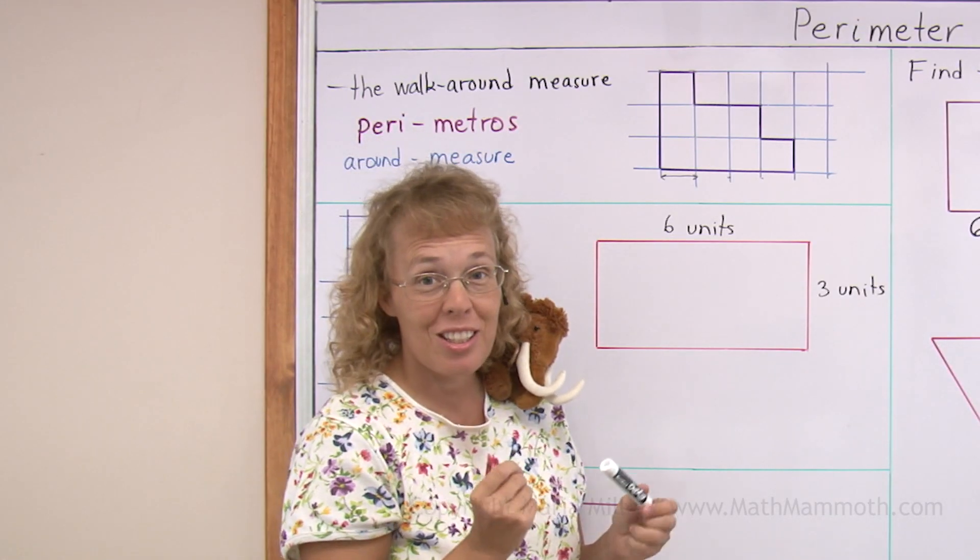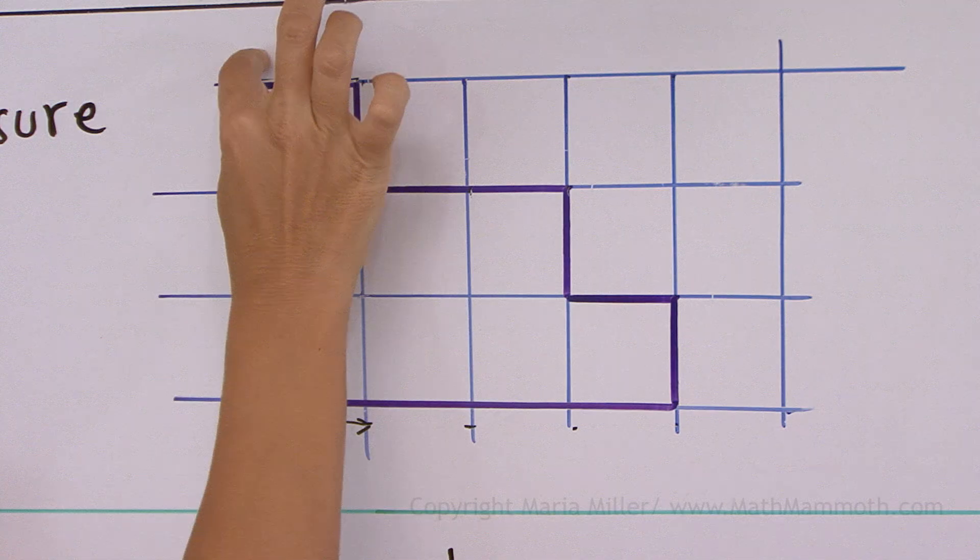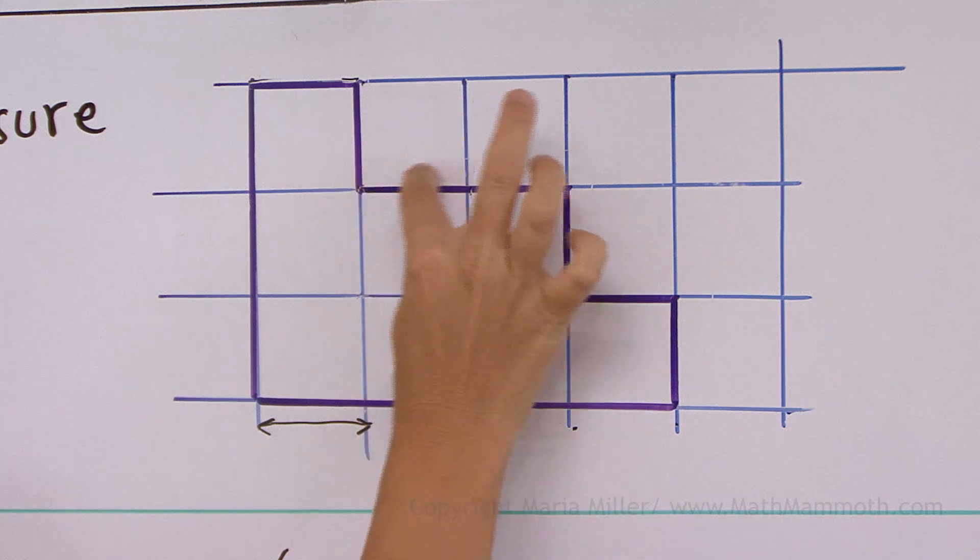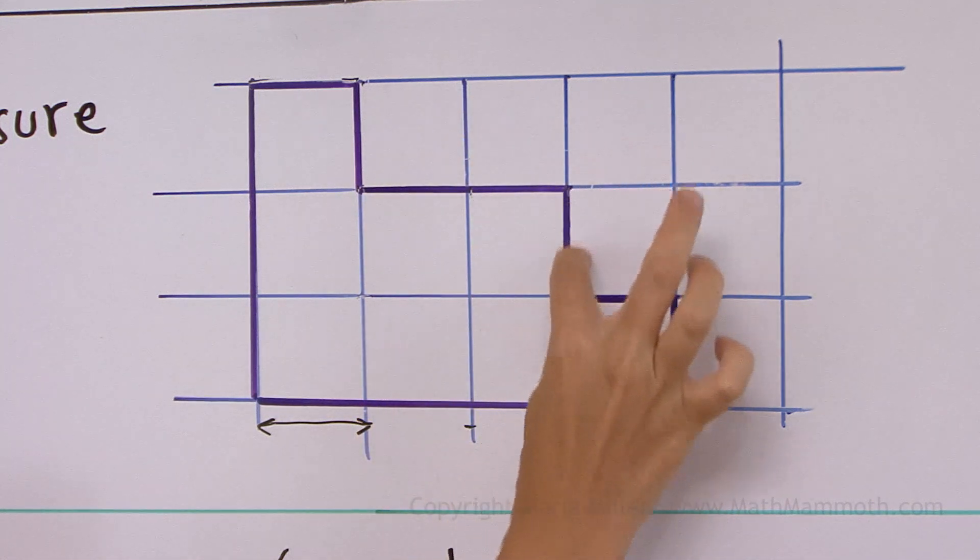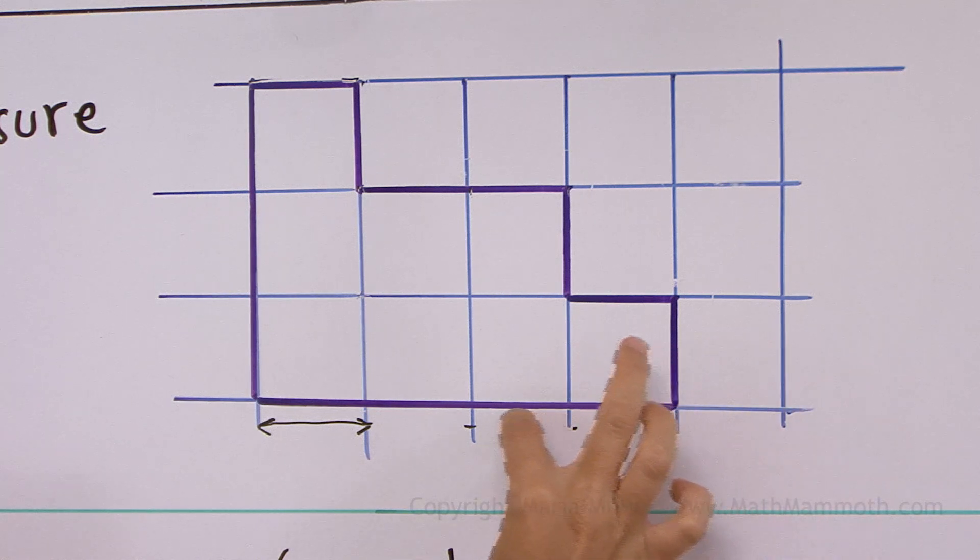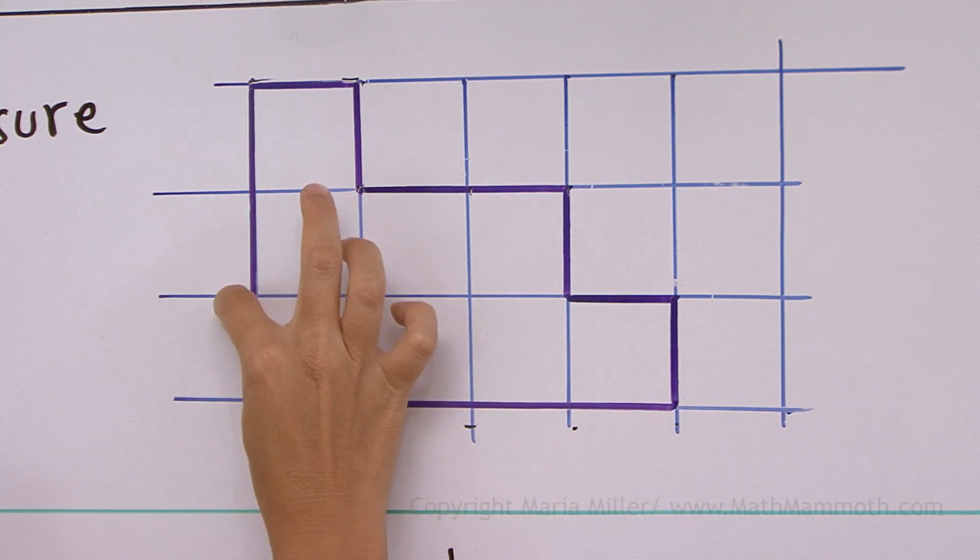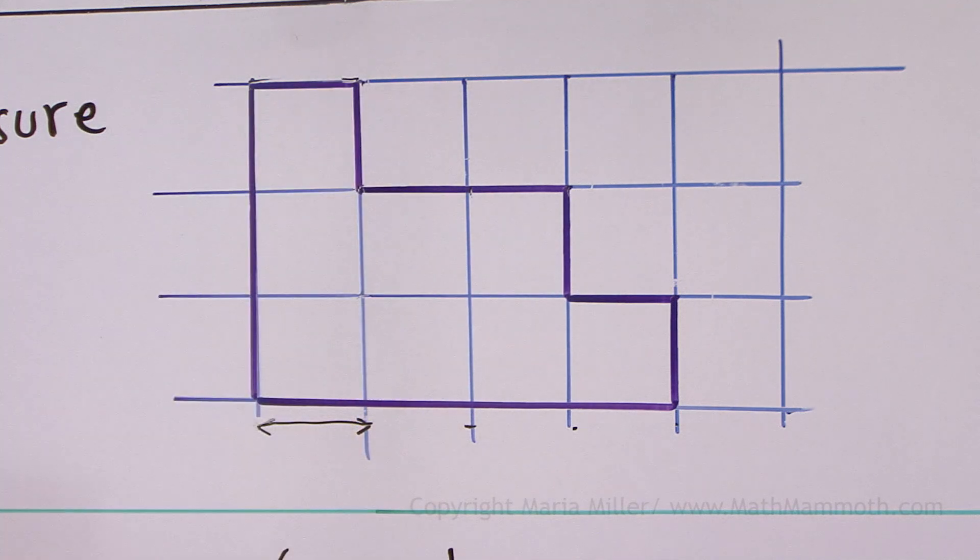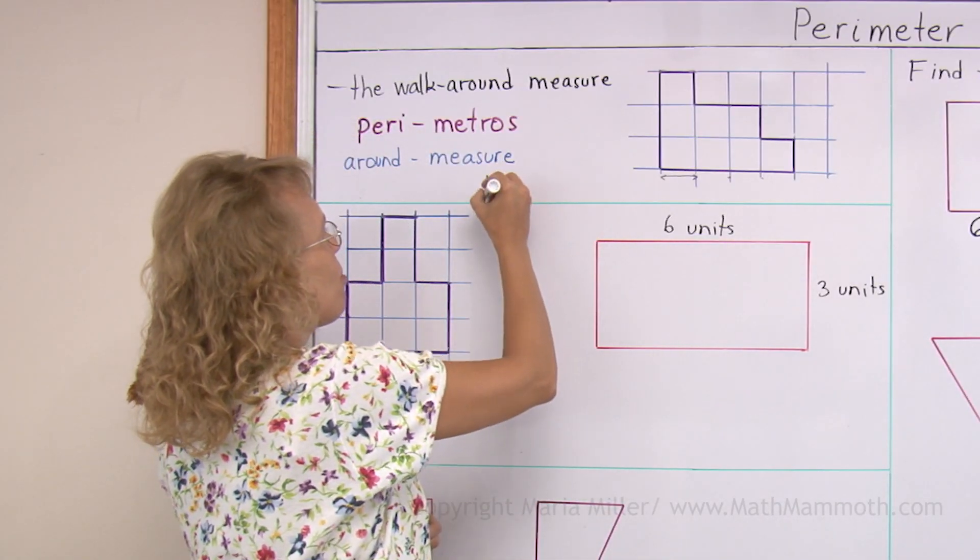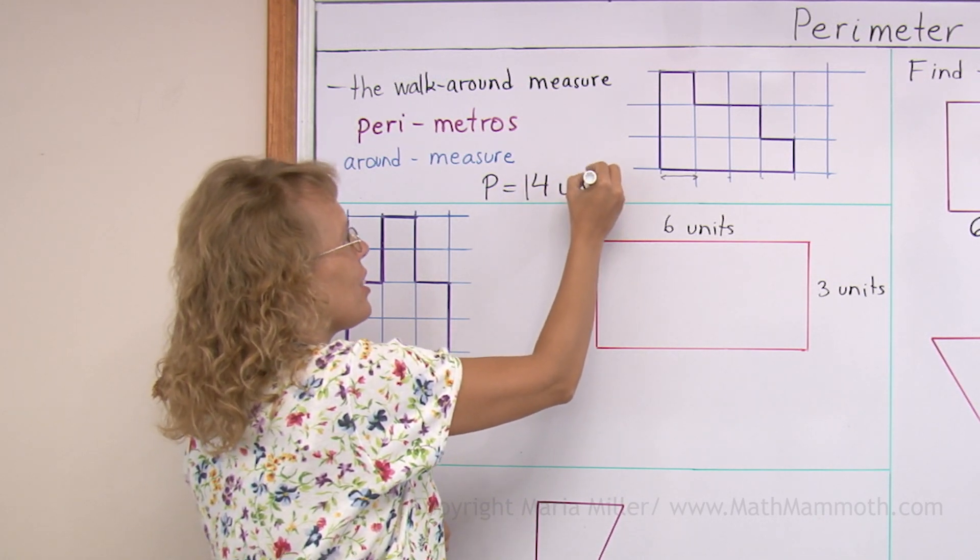Okay, are we ready? We're gonna go on a trip around this funny shape. Like this. One, two, three, four, five, six, seven, eight, nine, ten, eleven, twelve, thirteen, and fourteen. So for this figure the perimeter P equals fourteen units.